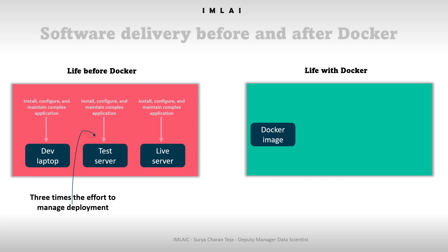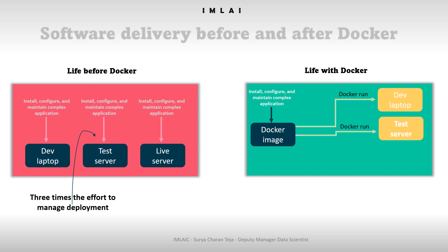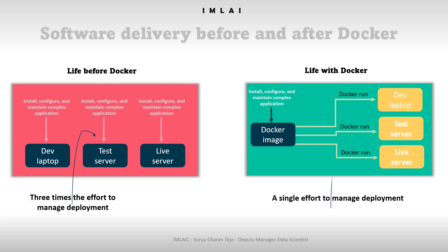With Docker, the configuration effort is separated from the resource management, and the deployment effort is trivial. You run Docker, the environment's image is pulled down and ready to run — consuming fewer resources and contained so it does not interfere with other environments. You don't need to worry about whether your container is going to be shipped to a Red Hat, Ubuntu, or CentOS machine — as long as it has Docker on it, it will be good to go.